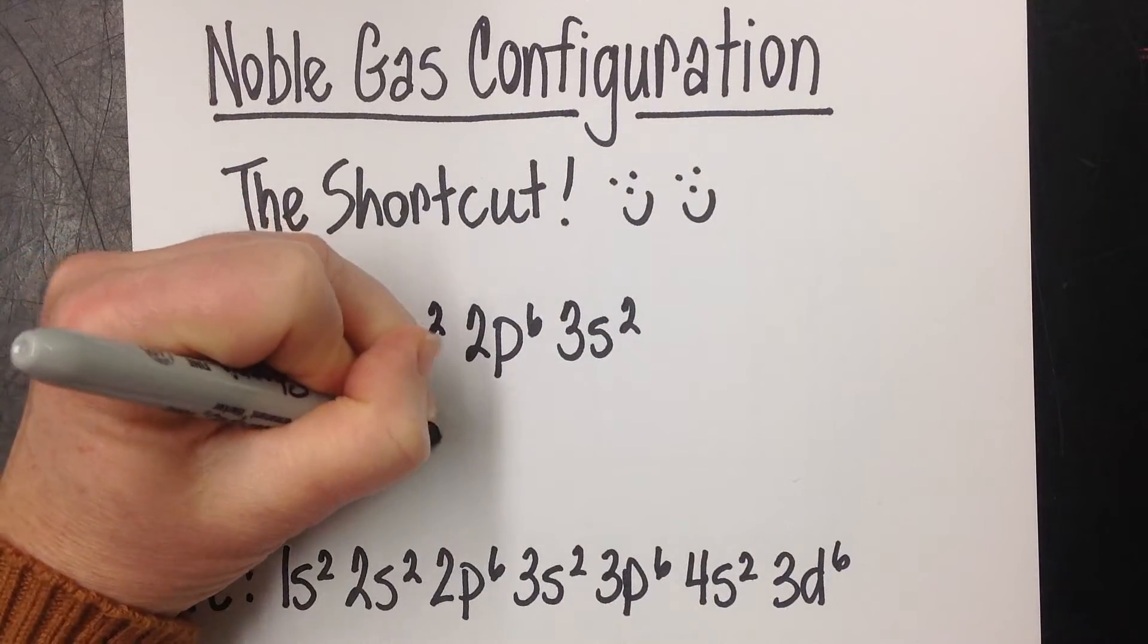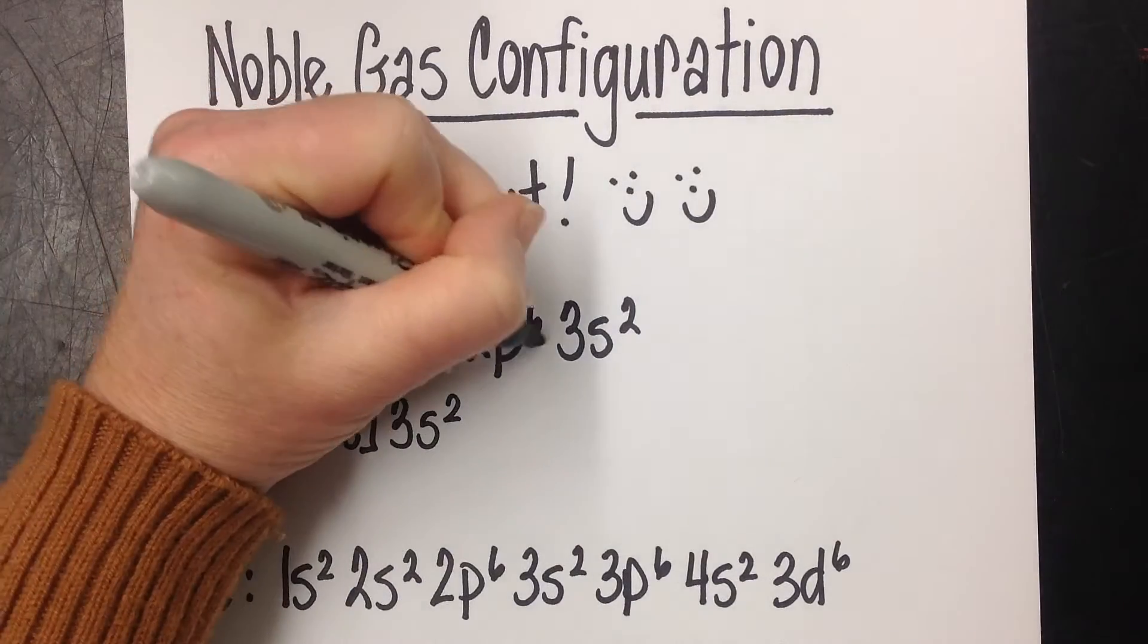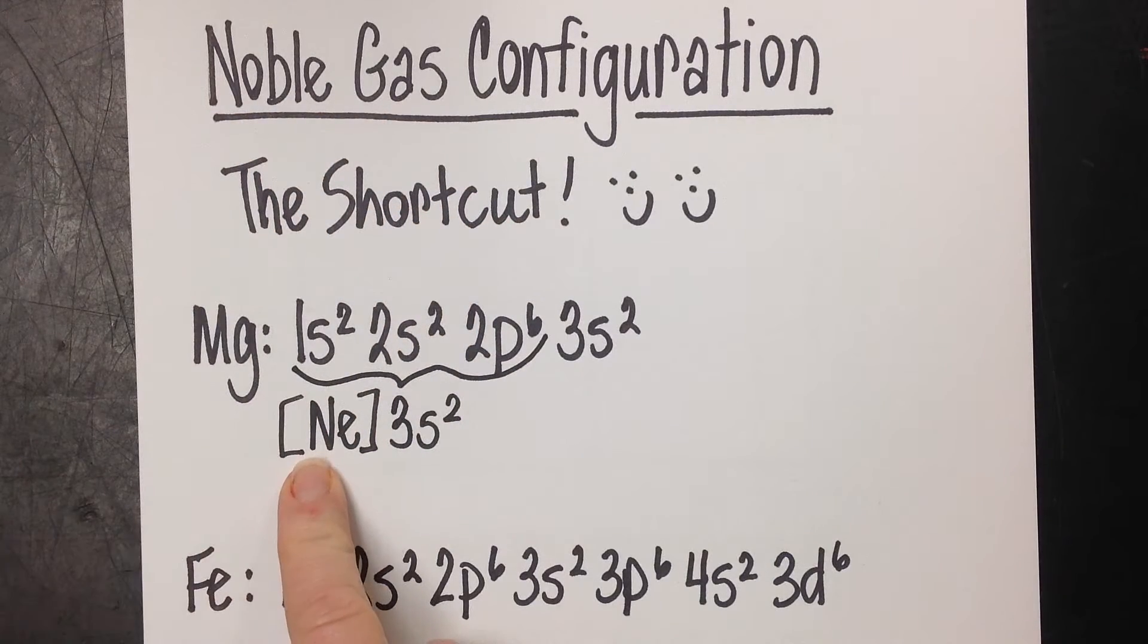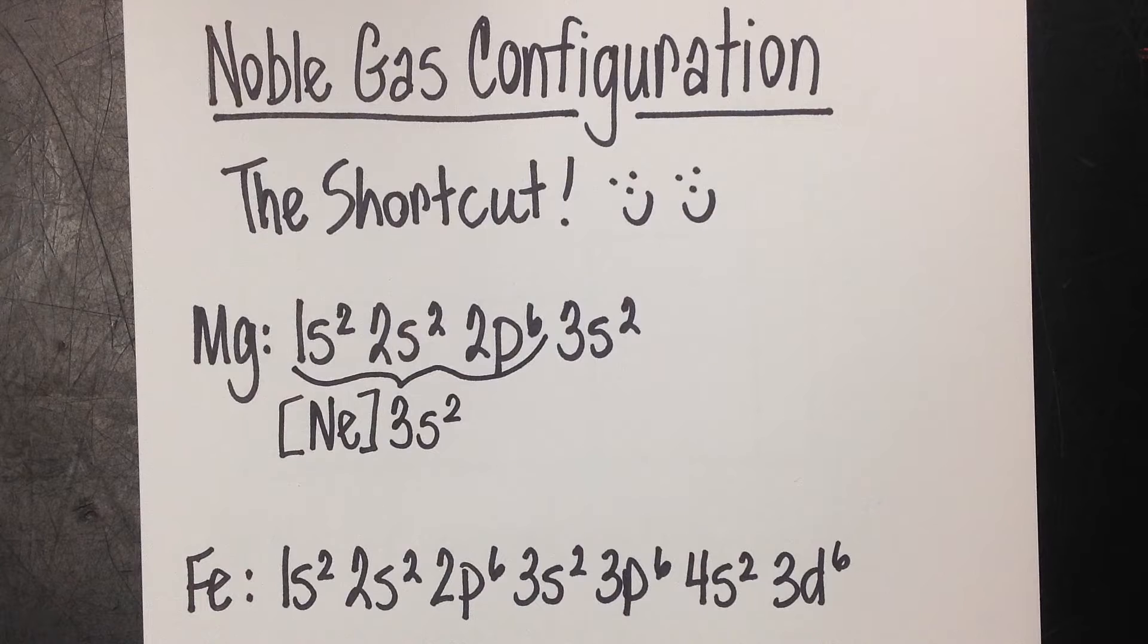Basically you've just picked up from that noble gas. You just said, I know you know how to get to neon, let me just take you from there. That's all noble gas configuration is. You saved a little bit of writing.